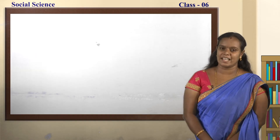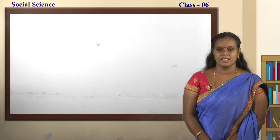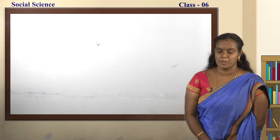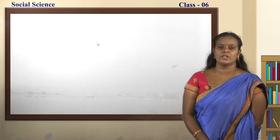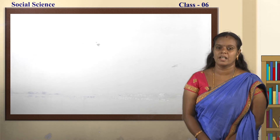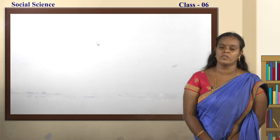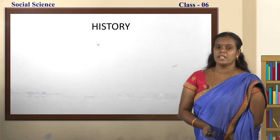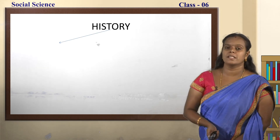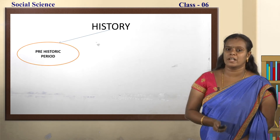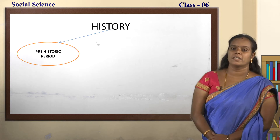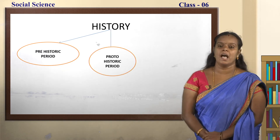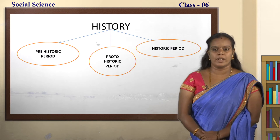Let's connect back to your activity and see how history is being divided into three parts. History is being divided into three parts based on the criteria of the script available or the written records. History is mainly divided into three main parts: the first one is prehistoric period, the second one is proto-historic period, and the third one is historic period.